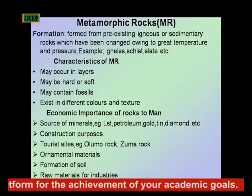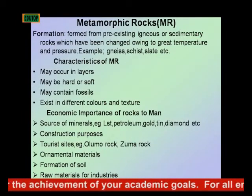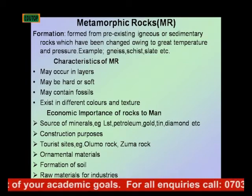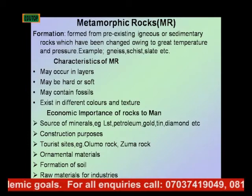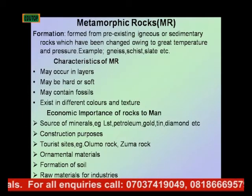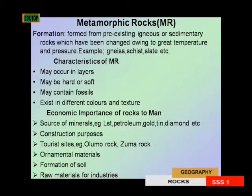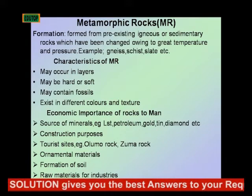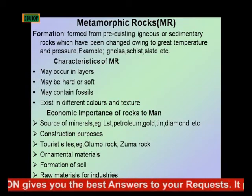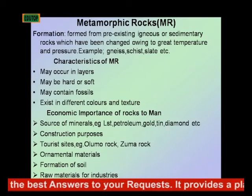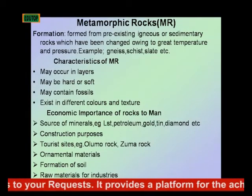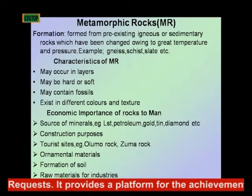Sedimentary rocks which have been changed owing to the great action of temperature and pressure — when these rocks are exposed to intense heat and pressure, they tend to be changed or modified, and the end product of this modification is what we call metamorphic rock. Examples of such rocks include gneiss, schist, slate, etc.